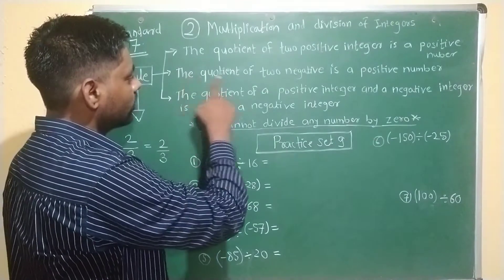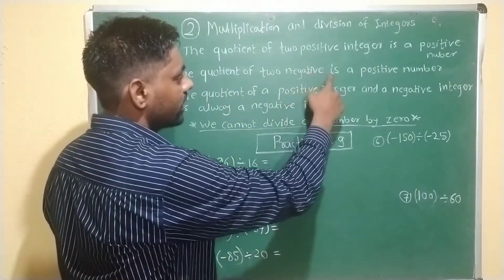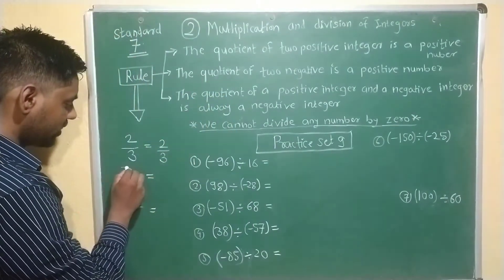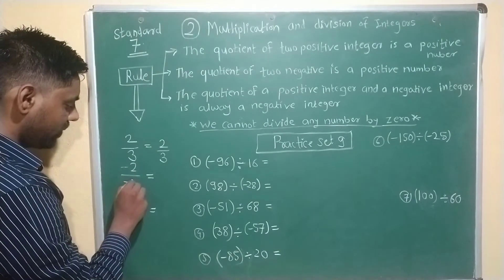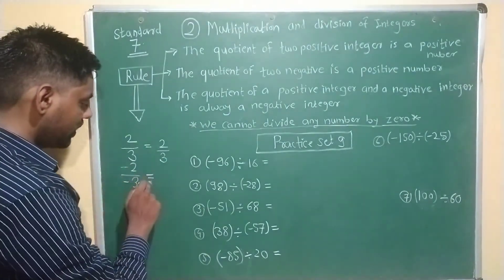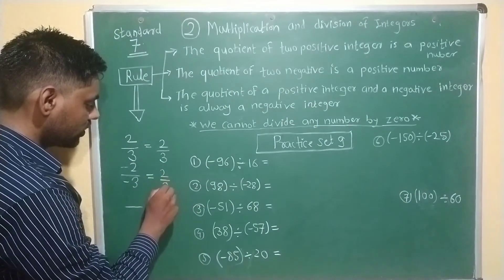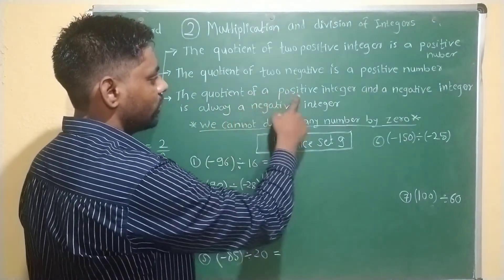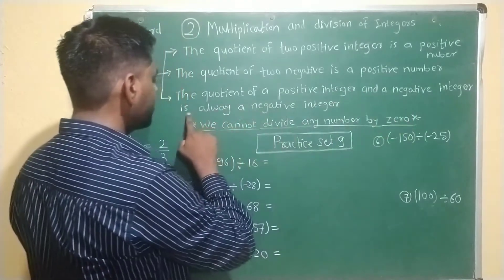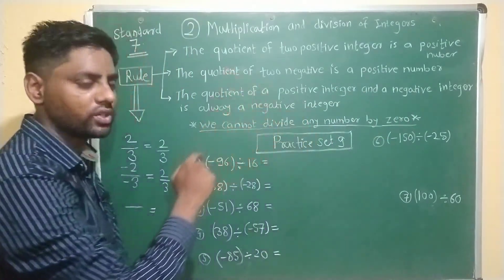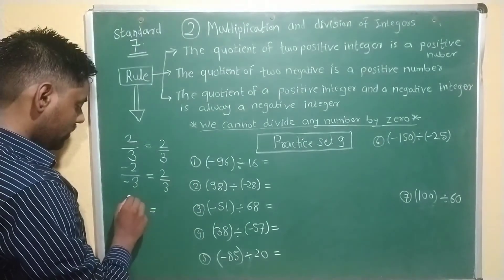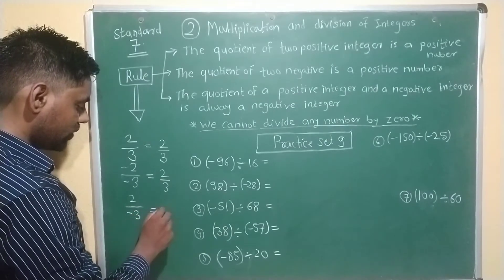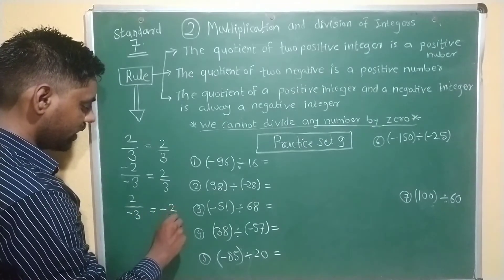Next rule: the quotient of 2 negative integers is a positive number. We take the example: minus 2 divided by minus 3 becomes positive 2 divided by 3. Next rule: the quotient of a positive integer and a negative integer is always a negative integer. Example: plus 2 divided by minus 3 is equal to minus 2 divided by 3.